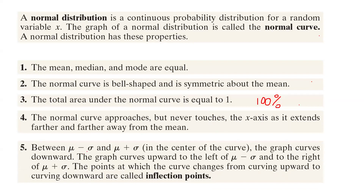Between mu minus sigma and mu plus sigma — meaning the center, adding and subtracting the standard deviation — the graph curves downward. The graph curves upward to the left of mu minus sigma and to the right of mu plus sigma. The points at which the curve changes direction are called inflection points. These are the most important properties for a normal distribution.